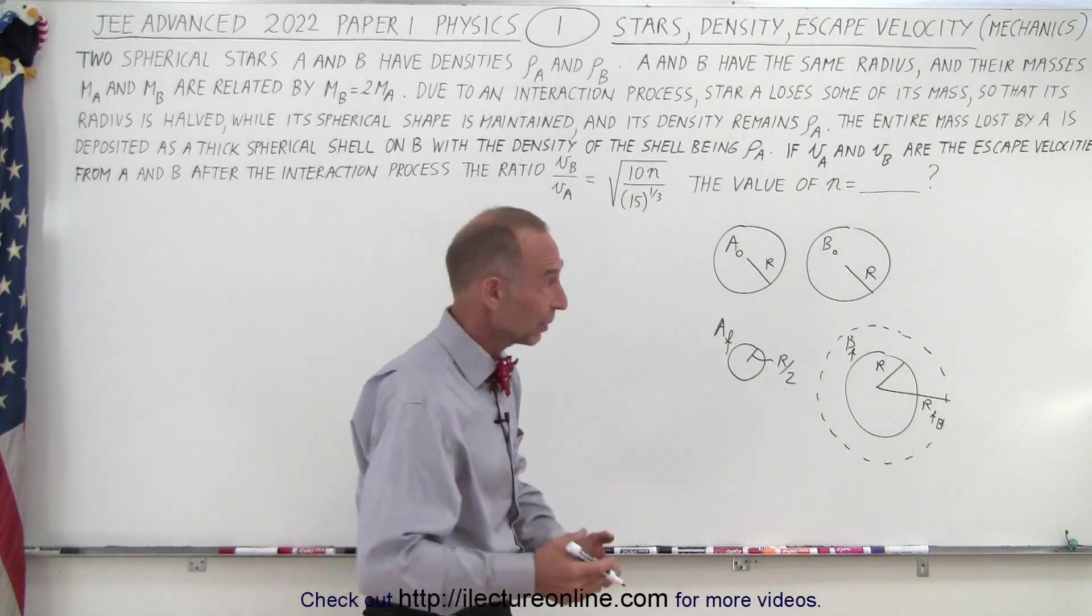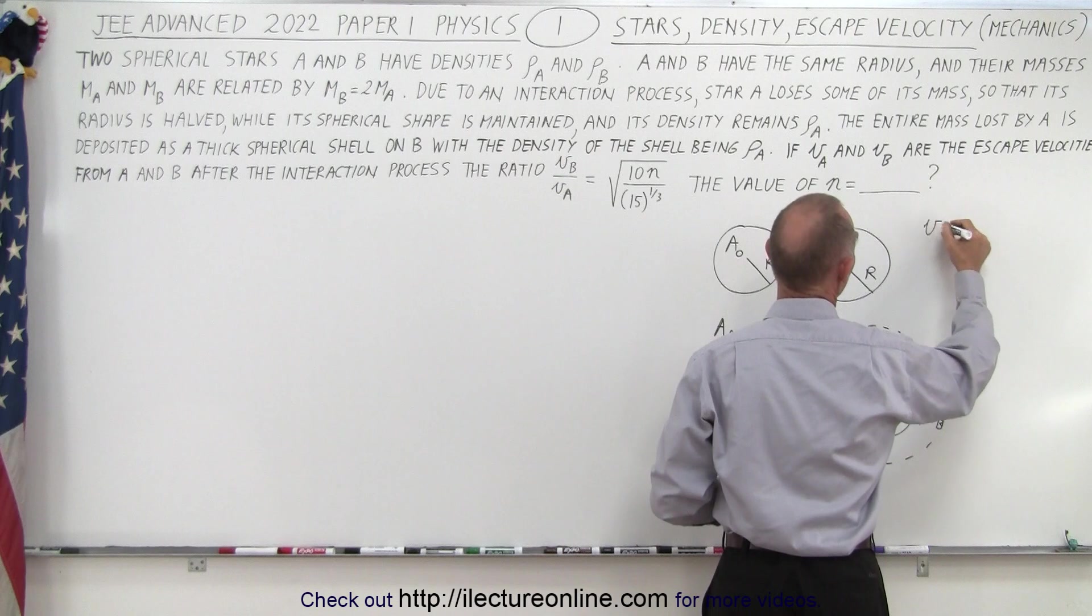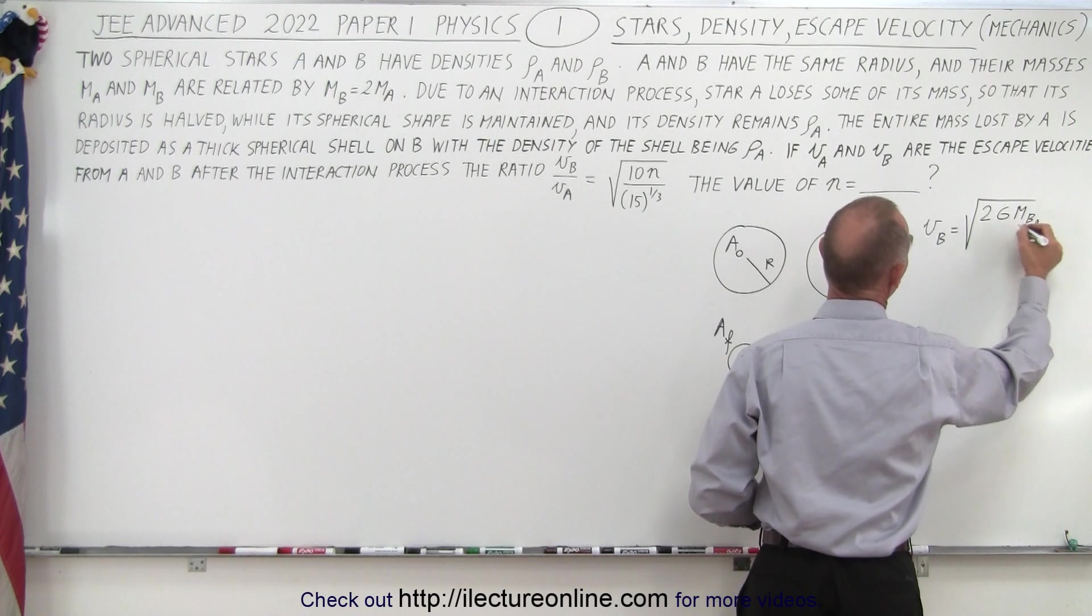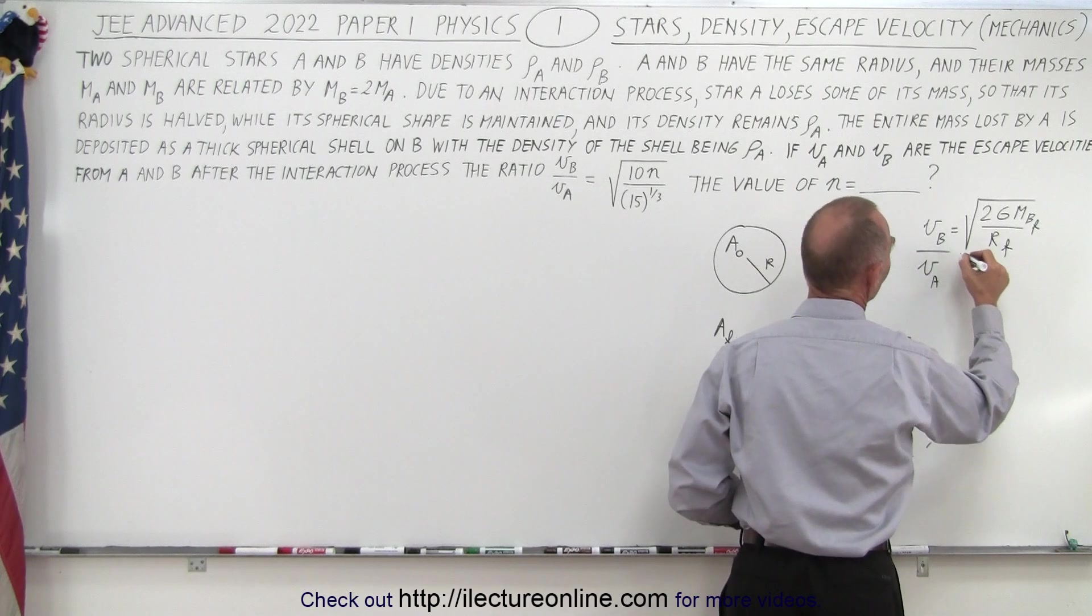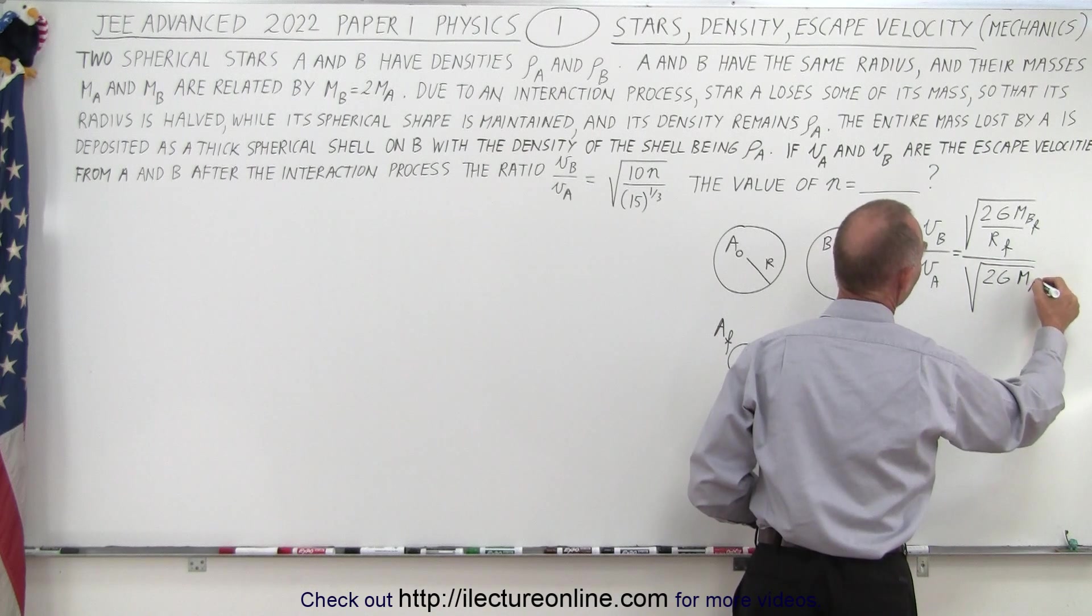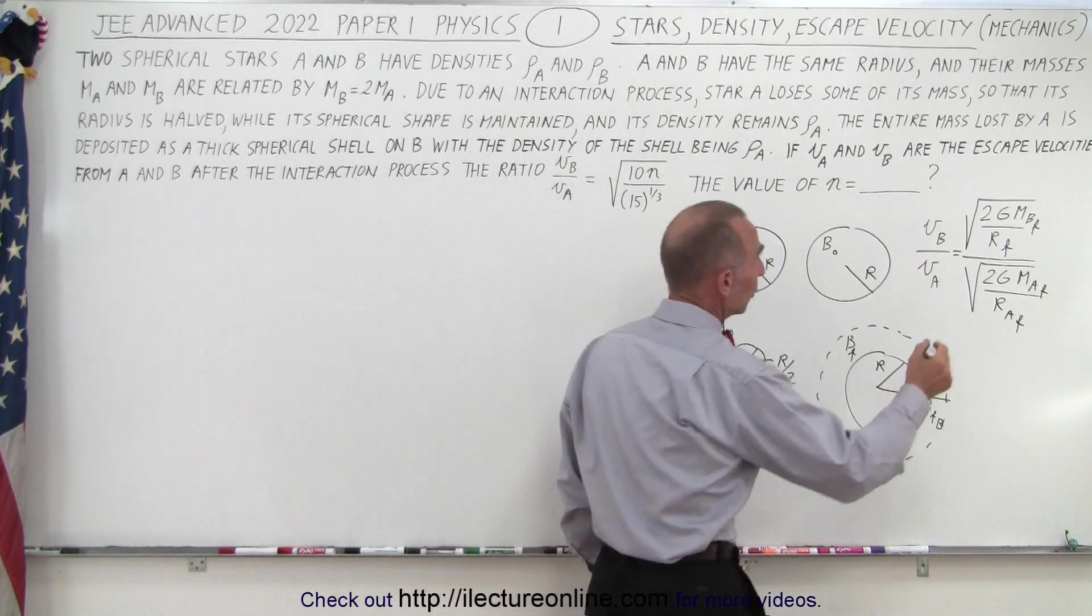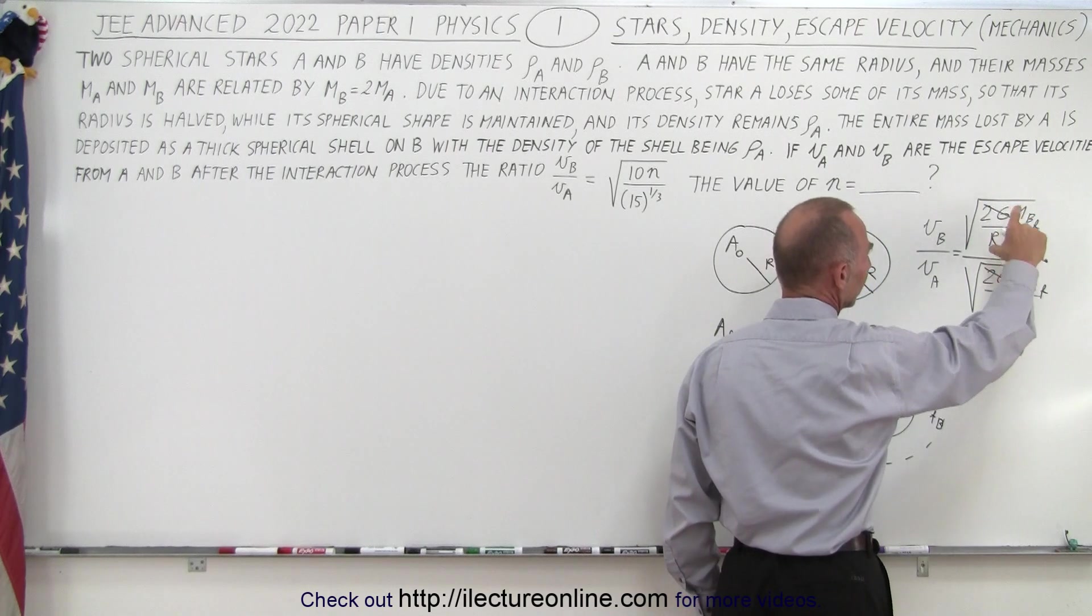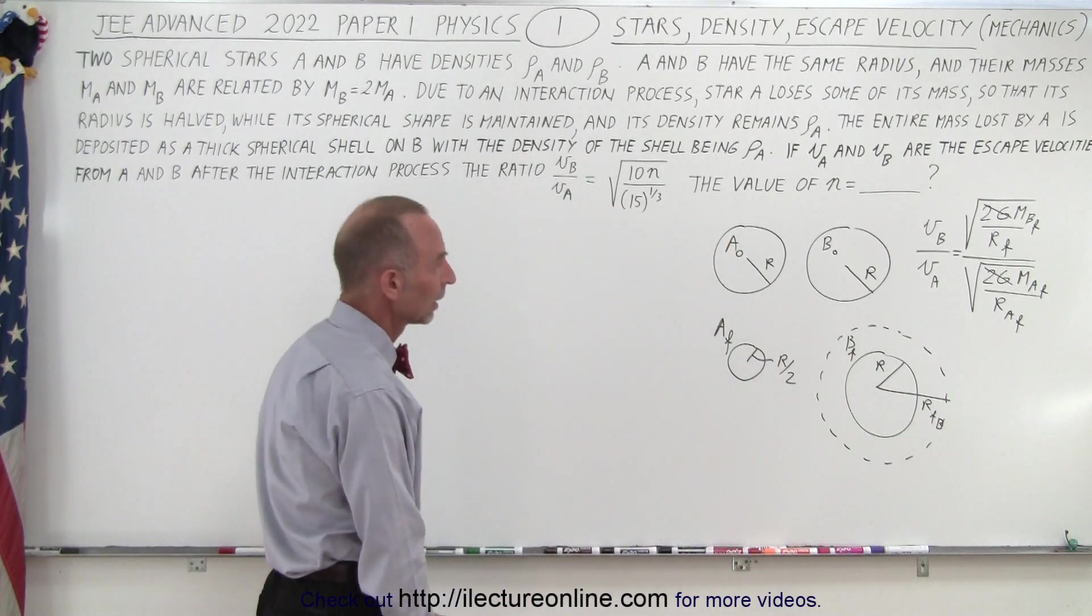All right, in order to solve this problem, you have to remember the equation for the escape velocity. And we know that the escape velocity of A, oh, let's see here, we have the ratio here, right? So the velocity of B is going to be equal to the square root of 2G mass of B, and that would be mass of B final, divided by the radius final. And of course, then we divide that by the escape velocity of A, which is equal to, and then we'll put the equal sign over here, the square root of 2G mass of A final, divided by the radius of A final. Okay, so that's the ratio we're looking for, and right away you can see that we don't need to know G, and we can cancel out the 2 as well. So it's simply a ratio of the square root of the mass over the radius for B divided by the mass over the radius for A, after the event, after the mass has been transferred.